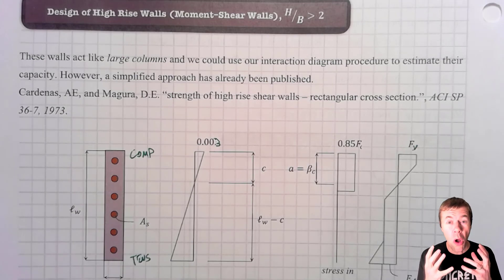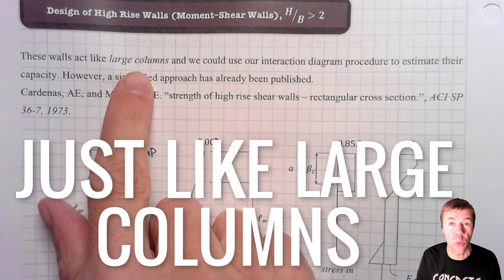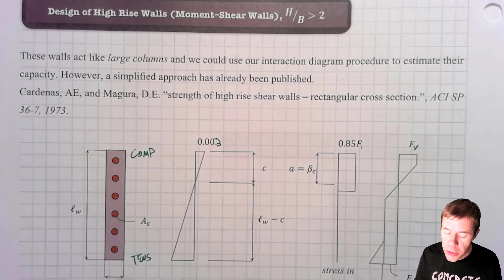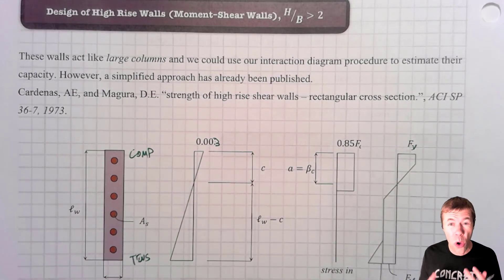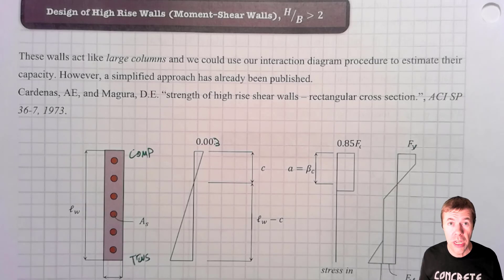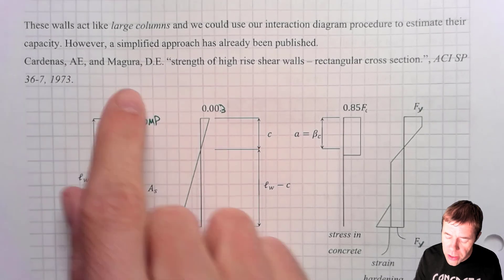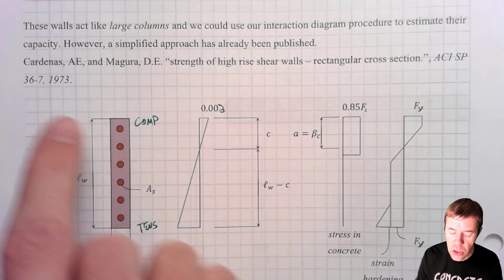We're going to be talking about shear walls today. And shear walls are just like large columns, really big columns. And just like columns, we use things called interaction diagrams to help us figure out the combination of axial load and moment that this structure can take.